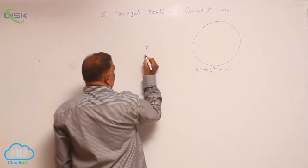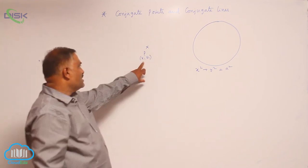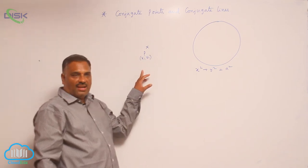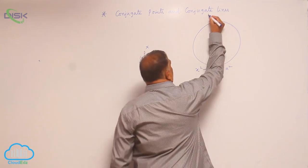Let us take a point p x1 comma y1. Now, since the point lies outside the circle, its corresponding polar lies inside the circle like this.